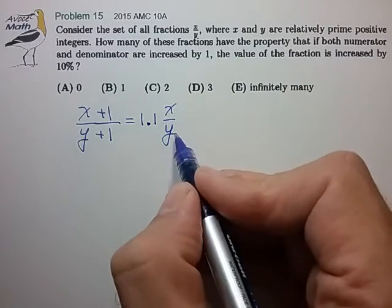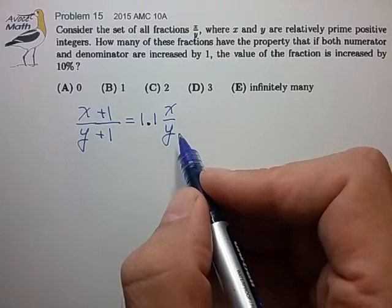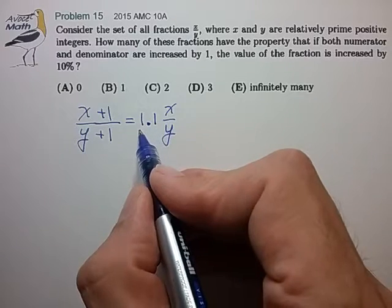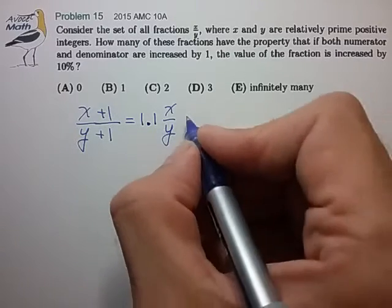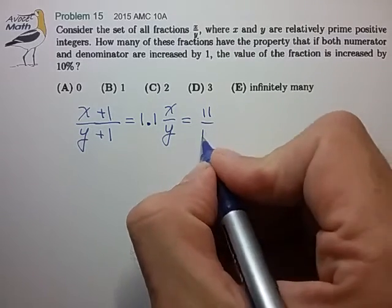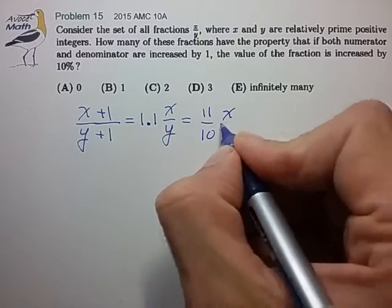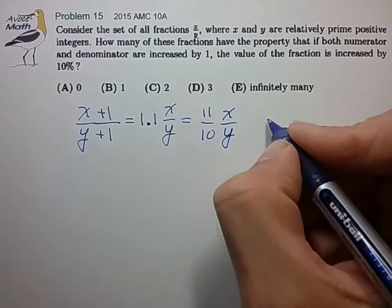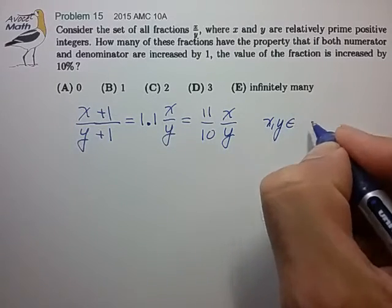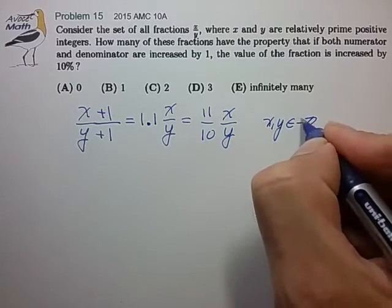And we're trying to solve for x and y in the set of integers. So let's replace our 1.1 with an equivalent integer expression, 11 over 10, times x over y. Again, we're trying to solve for x and y in the positive integers.